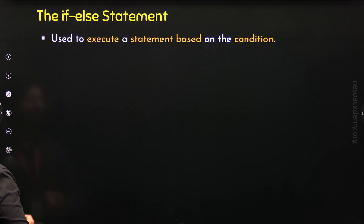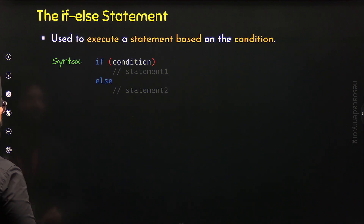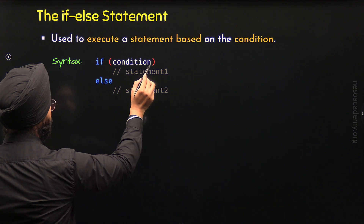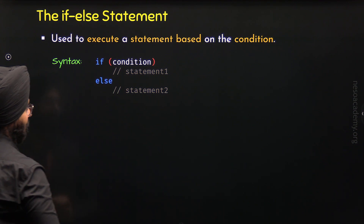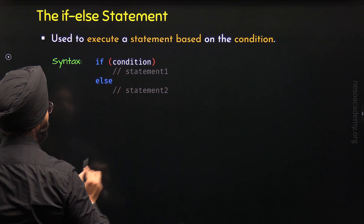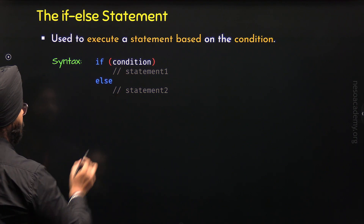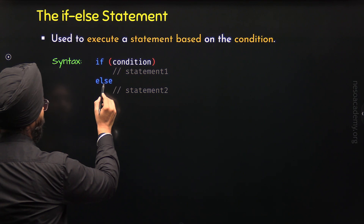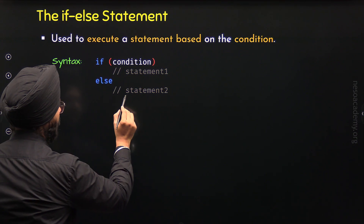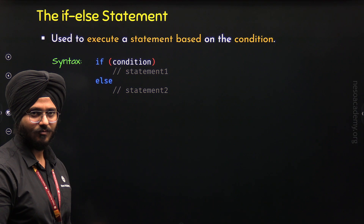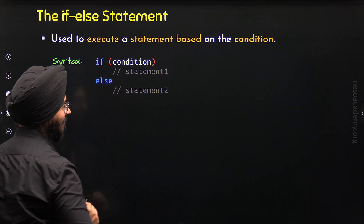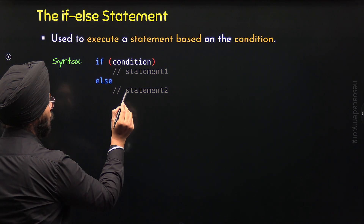To understand this properly, let's consider the syntax of the IF ELSE STATEMENT. This is the syntax we need to follow. Here we have IF and ELSE. We can observe we have parentheses and within parentheses, we need to specify the condition. If this condition is true, then STATEMENT 1 will execute — that is, the statement following IF will execute. Otherwise, the statement following ELSE will execute, that is STATEMENT 2. We can read it like: if condition is true, then execute STATEMENT 1, otherwise execute STATEMENT 2.